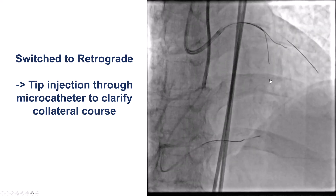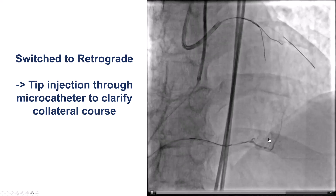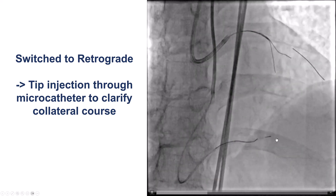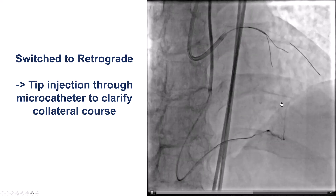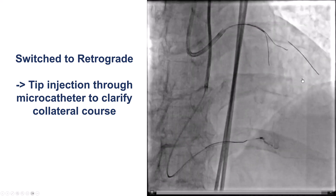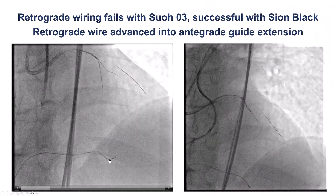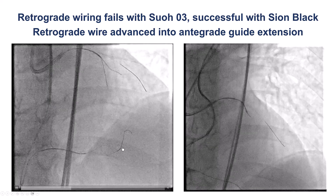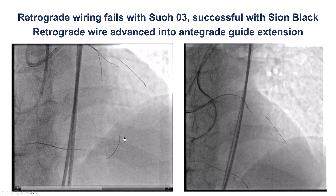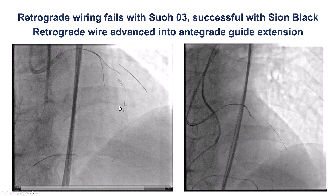After trying for a while, we decided to switch to the retrograde approach. We used a retrograde microcatheter tip injection and saw connections going to the LAD — the most distal connection appeared to be the largest. We tried with a Sion Blue, but that didn't work. Eventually a Caravel did track through a septal collateral and advanced into the LAD.